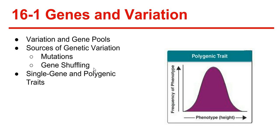Next, we have single gene and polygenic traits. Heritable variation can be expressed in a variety of ways. The number of phenotypes produced for a given trait depends on how many genes control the trait. A single gene trait is controlled by one gene with two alleles. However, many traits are polygenic traits, meaning they're controlled by two or more genes, and each gene of a polygenic trait often has two or more alleles.